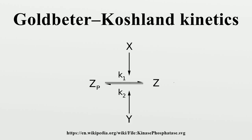The Goldbeter-Koshland kinetics describe a steady-state solution for a two-state biological system. In this system, the interconversion between these two states is performed by two enzymes with opposing effect. One example would be a protein Z that exists in a phosphorylated form Zp and in an unphosphorylated form Z. The corresponding kinase Y and phosphatase X interconvert the two forms, and we are interested in the equilibrium concentration of protein Z.